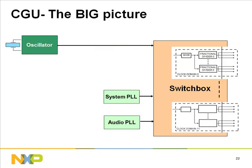The CGU is used for deriving all the clocks in the LPC 313X. A reference clock is generated by the oscillator with an external 12 MHz crystal. A programmable system clock frequency is generated by the system PLL, and a programmable audio clock frequency is generated by the audio PLL.